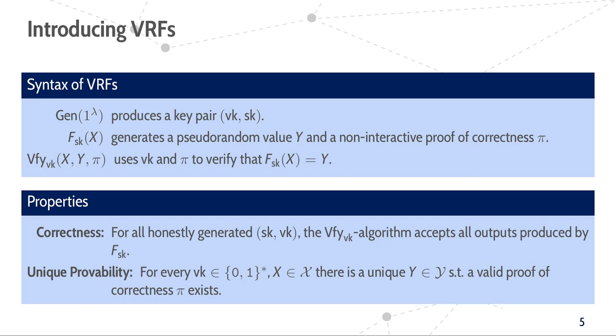We require from a VRF that it is correct, meaning all honestly generated VRF outputs are accepted by the verification algorithm. We furthermore require unique provability from a VRF, meaning that for every input X and every verification key VK, there is a unique output Y for which a valid proof Pi exists. Note that we also require this for maliciously generated verification keys, not only for honestly generated ones.